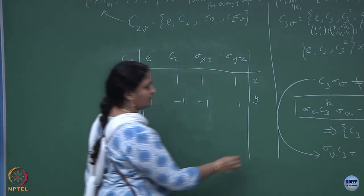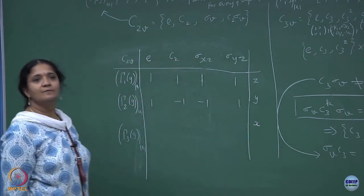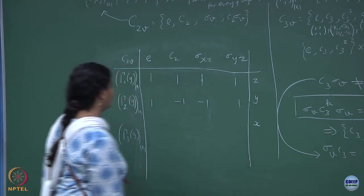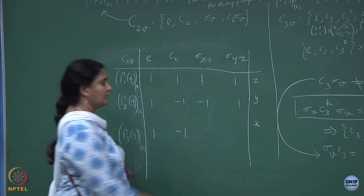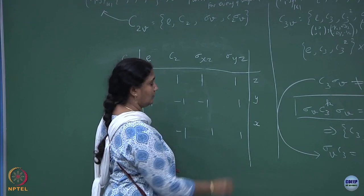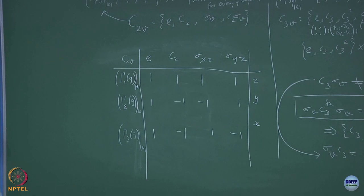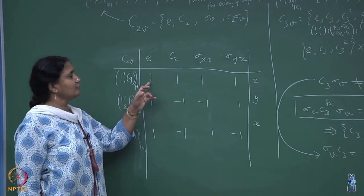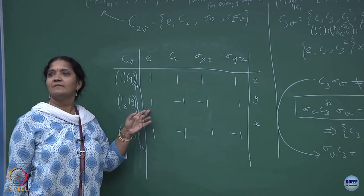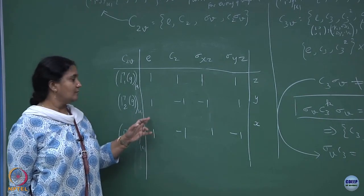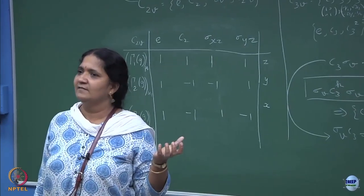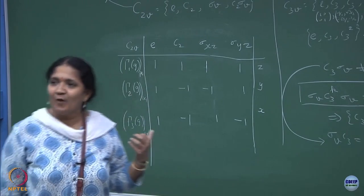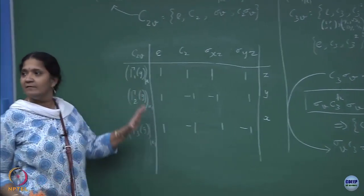Let me call this as sigma xz and let me call this as sigma yz. Here it will become minus 1. And then sigma 3 is going to operate on the x axis. You have 1, minus 1, minus 1, 1, and this has to be minus. What do you notice from this? If you take the dot product of this row with this row, it is 0. Any two rows if you take the dot product it is 0, which is the property of those rotation matrices — the rotation matrices have to be orthogonal. What I have done here is writing these 1 cross 1 matrices.